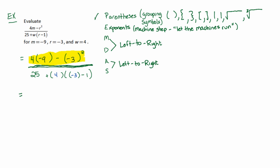Now I will concentrate on exponents or machines. Looking from left to right, I see that the only machine I have is the squaring machine, so I'll let that run. We have 4 times negative 9 minus, and I rewrite everything else except for what I'm working on. What does the squaring process mean? It means take that object, which is negative 3, and multiply it by itself. Negative 3 times negative 3 is positive 9.